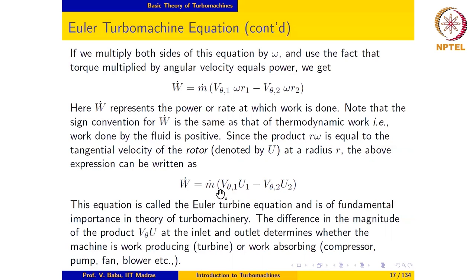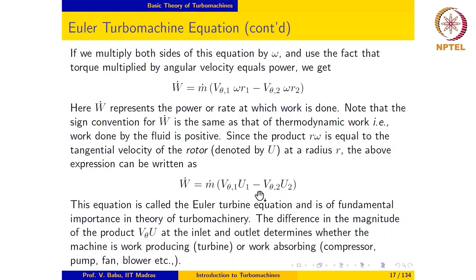One point worth noting — which will be taken up in detail later — is that the Euler turbine equation involves only fluid mechanical quantities, namely velocities of the fluid and mass flow rate. No thermodynamic properties appear in the Euler turbine equation as written here. This is something we will develop further at a later point.